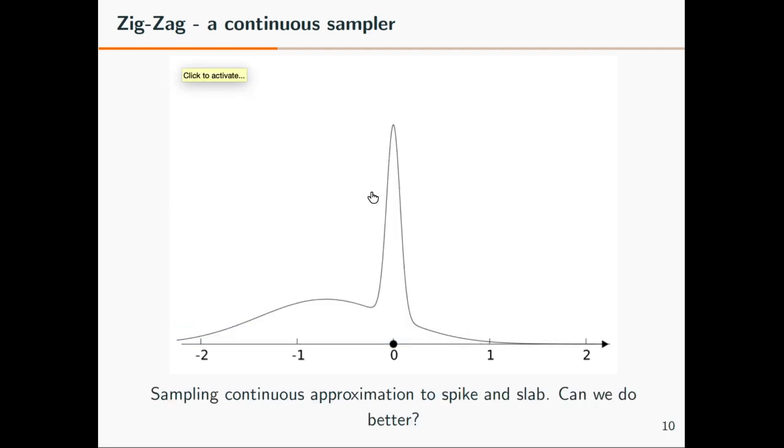So we can use the sampler. Here you see a continuous approximation to such a spike and slab. Instead of having a Dirac measure at zero there's a continuous component. Now our sampler is sampling from this distribution, but you see that it has to do quite a bit of work. That's typical for any gradient-based sampler. The sampler will choke on a continuous approximation to the spike and slab because the gradient here becomes so high. So can we do something better? And there comes the unique strength of our sampler into play.